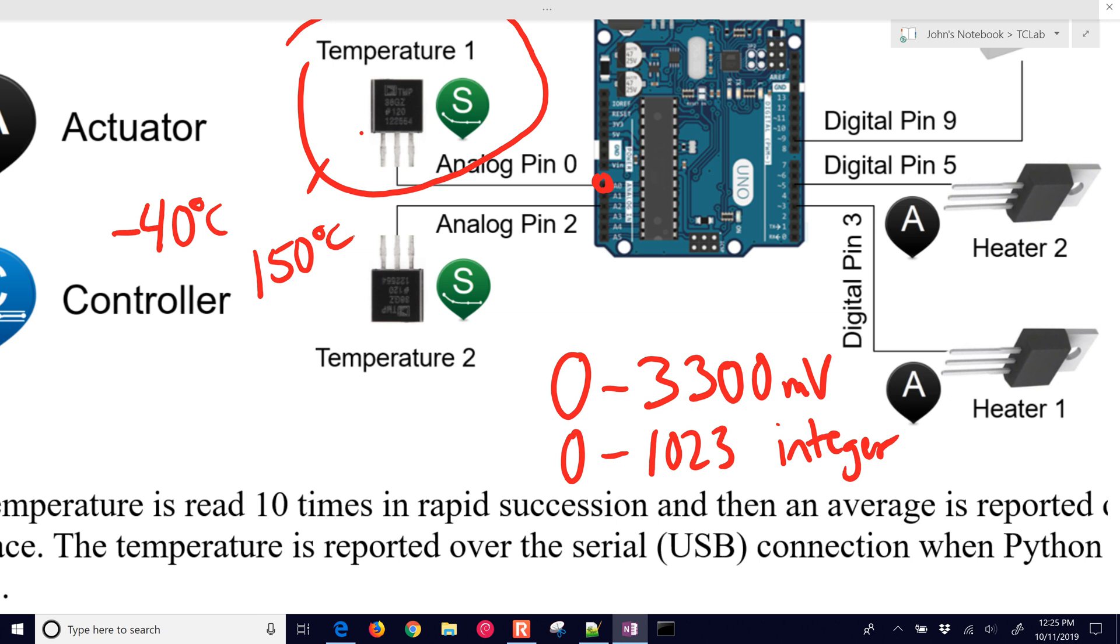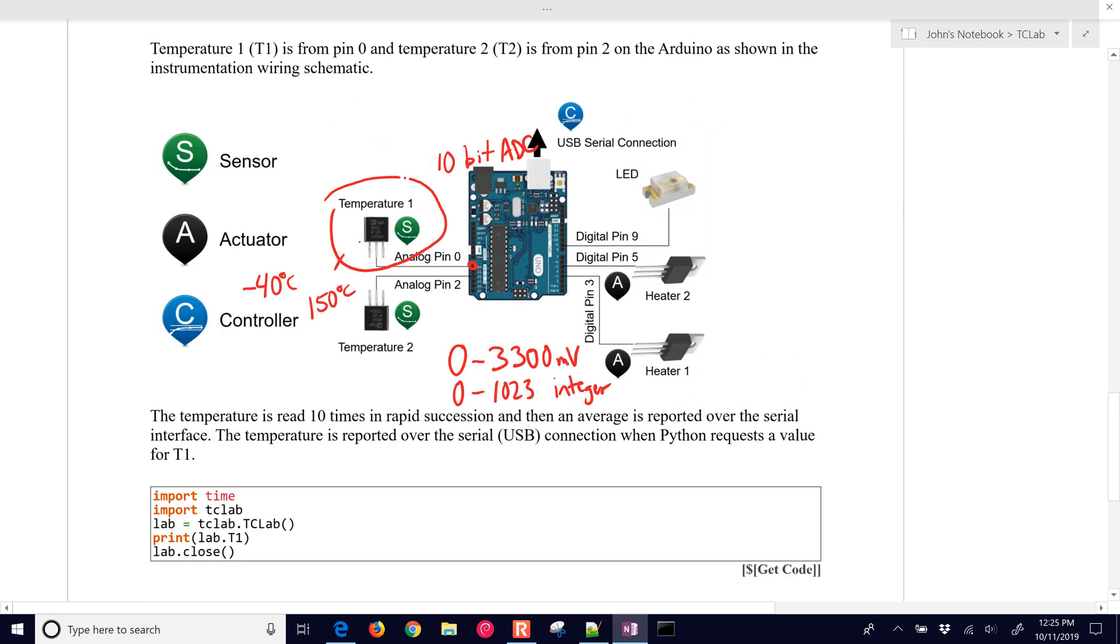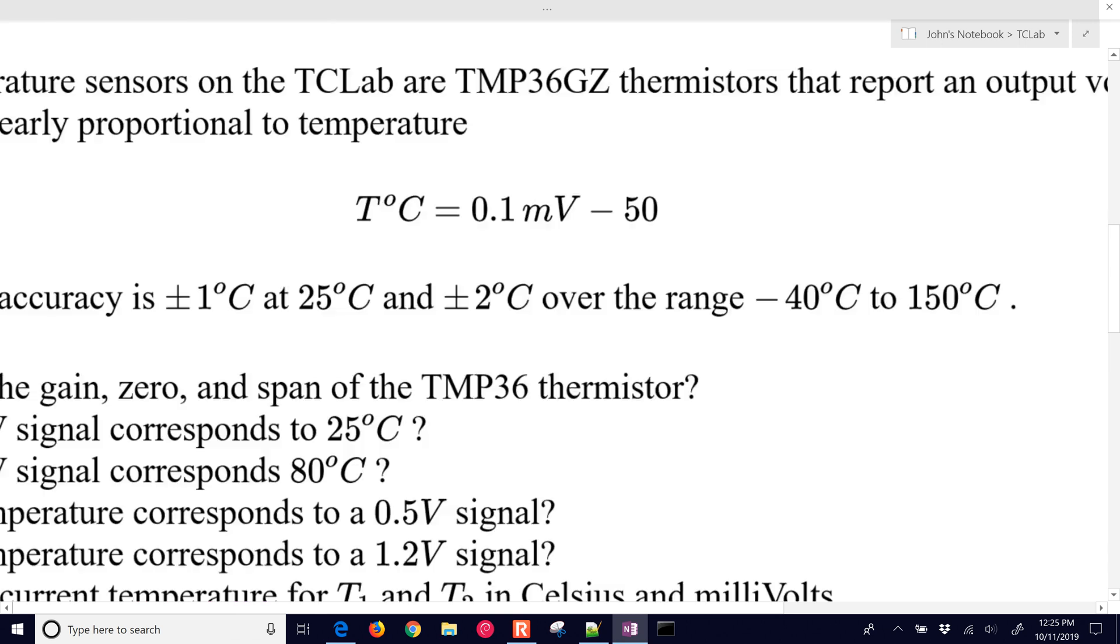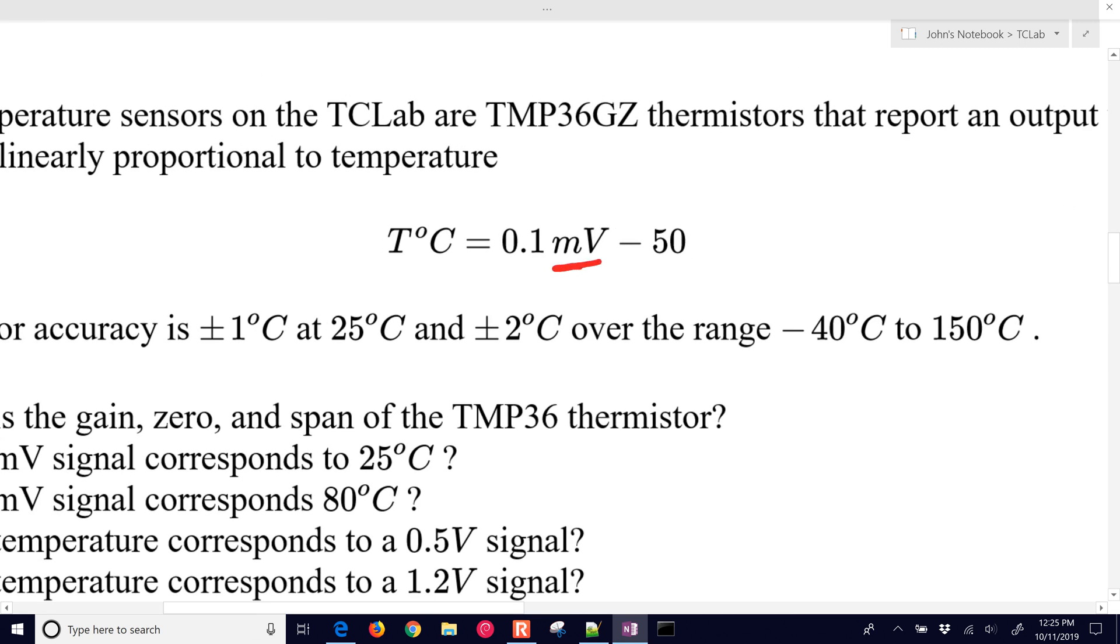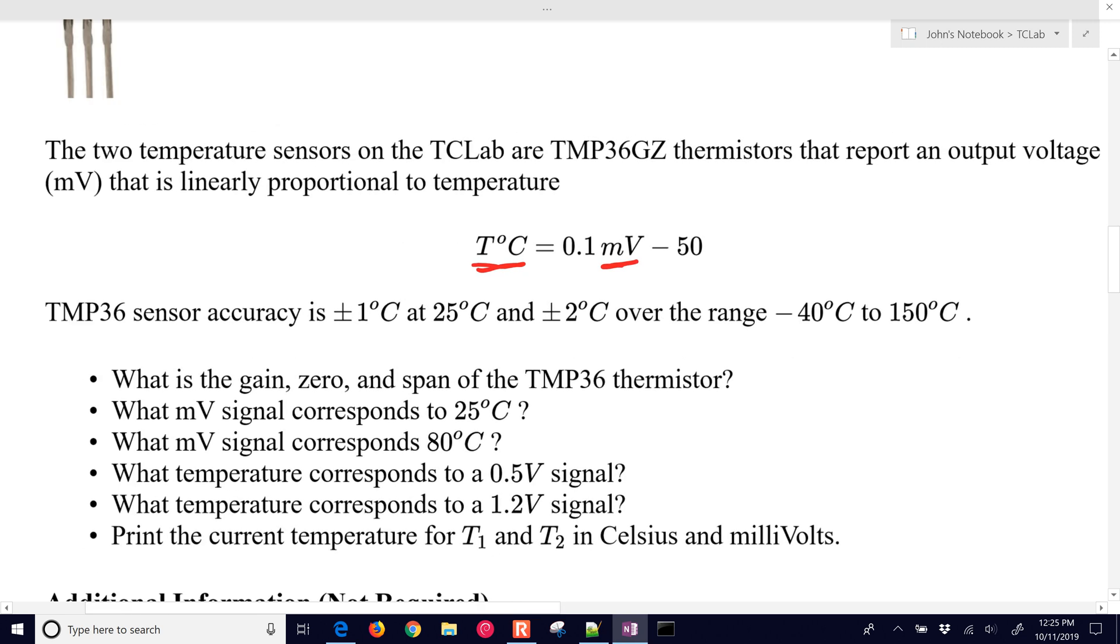We're going to determine, with this exercise, what is the gain, range, and span of this. Once it's converted to the integer, we then use a formula to convert it to degrees Celsius. Here is the formula that we use, millivolts into degrees Celsius, and information about the accuracy. It's plus or minus 1 degree Celsius at 25 degrees Celsius, and plus or minus 2 degrees Celsius over the entire range. These sensors don't need calibration. They are thermistors that have a temperature effect, and they return a different millivolt based on the temperature.